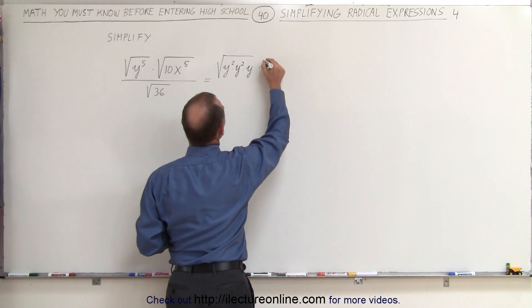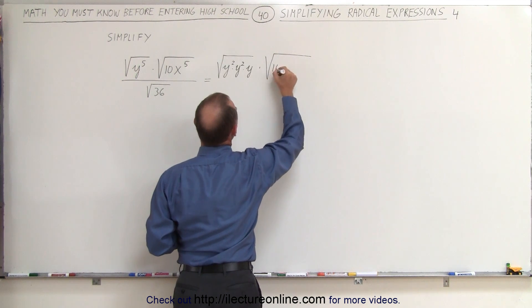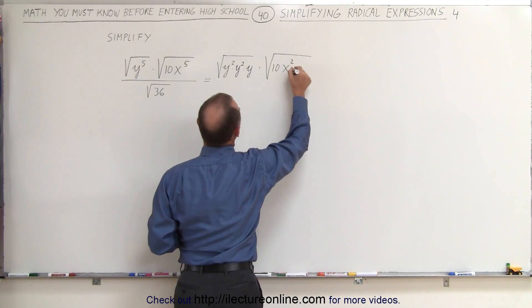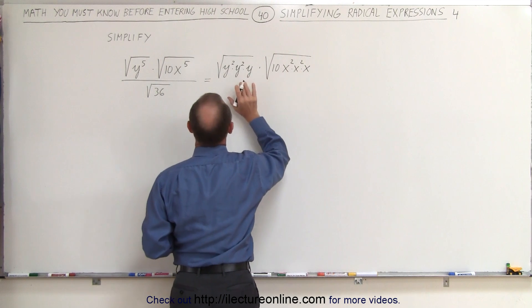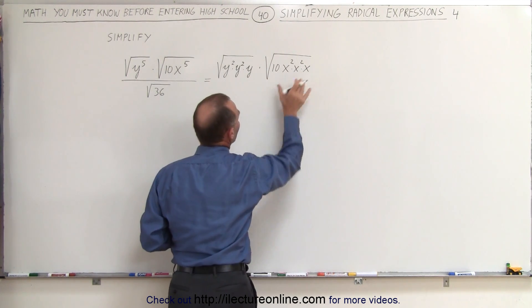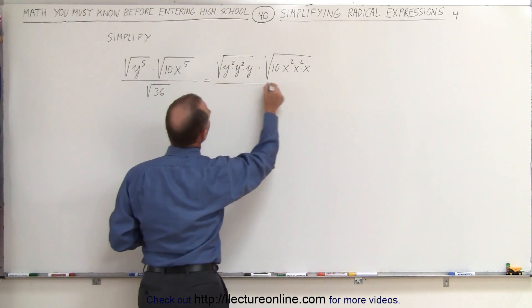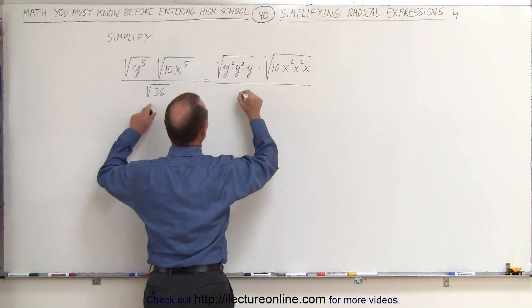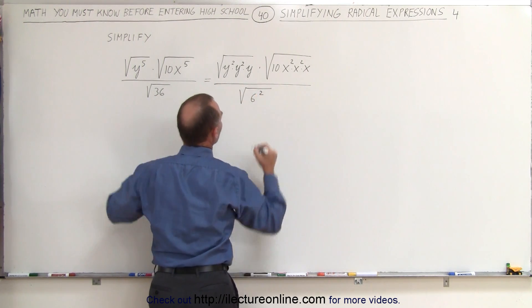Here we can write that times the square root of 10 times x squared times x squared times x. Just like we did for y to the fifth, we could write x to the fifth like that. And then in the denominator we can say the square root of 36 can be written as the square root of 6 squared.